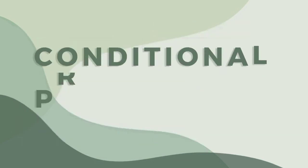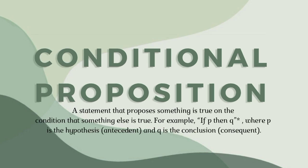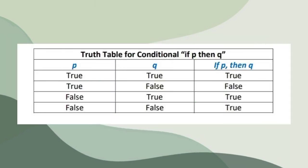Now let's have conditional proposition. A statement that proposes something is true on the condition that something else is true. For example, if P then Q, where P is the hypothesis and Q is the conclusion. So this is the truth table for conditional.